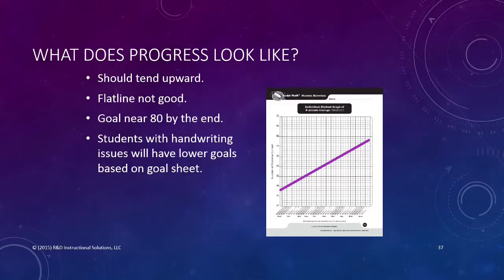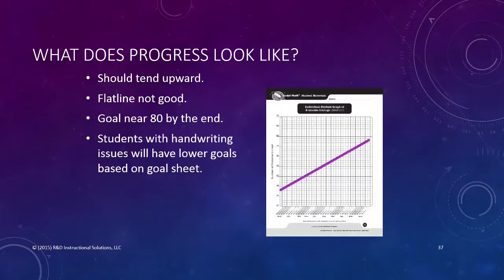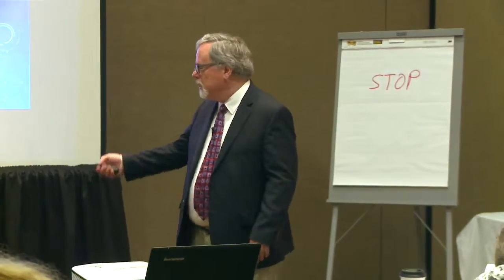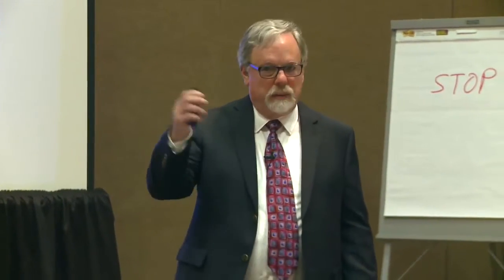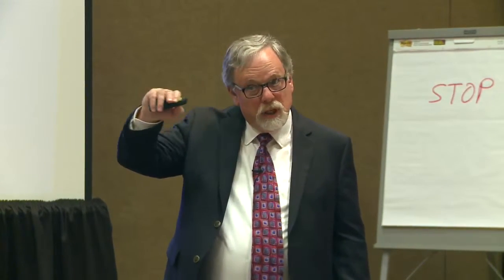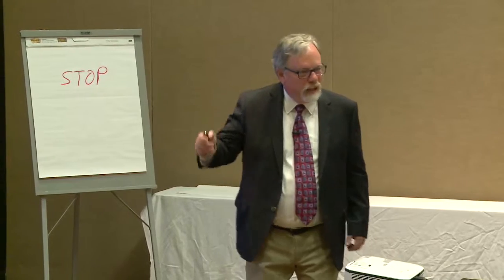The individual progress chart is stapled on the inside. You give the first timing, then put the number at the bottom that works for each student based on how fast they could write and how many they could answer to begin with. It should trend upward. I've had people show me graphs that are neatly filled in and completely flat — that's like a hospital monitor that goes flat. When that monitor goes flat, that's not good. You don't want these graphs to be flat; they should be trending upward.